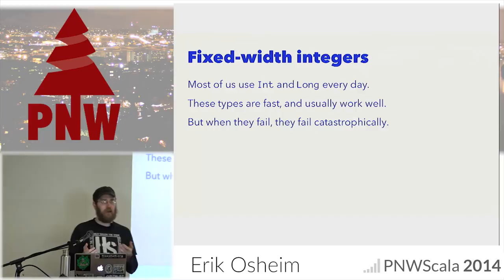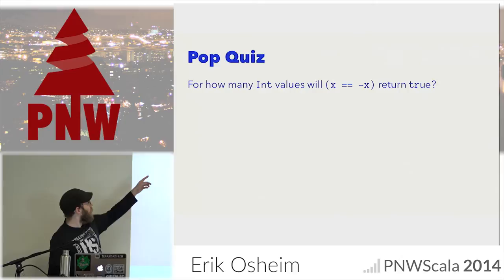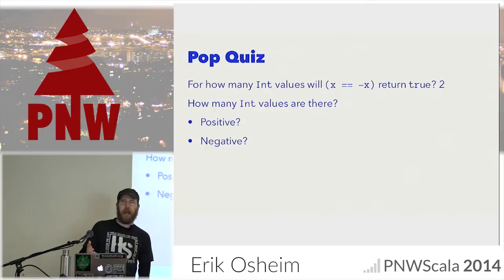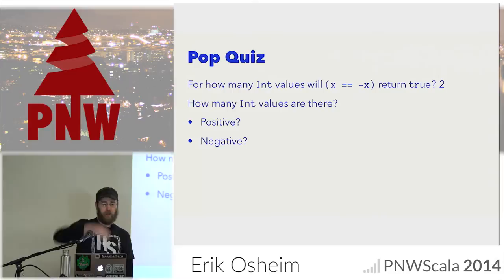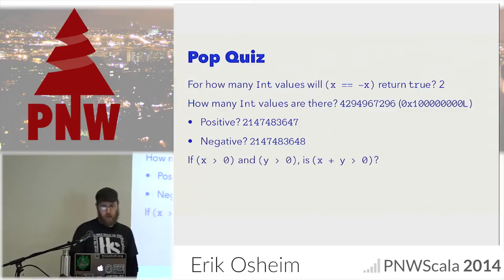To start with, fixed-width integers: Int and Long. We've got great syntax to support them, we use them every day. But the big problem is that they mostly work, and when they fail, they fail in a completely catastrophic manner. For example, how many Int values will make abs(x) == x return true? Zero is the obvious one, and Int.MinValue is the non-obvious one — it's so low that there's no positive number that can represent it. There are more negative numbers than positive numbers, and it's easy to forget this when you write code that uses negation.